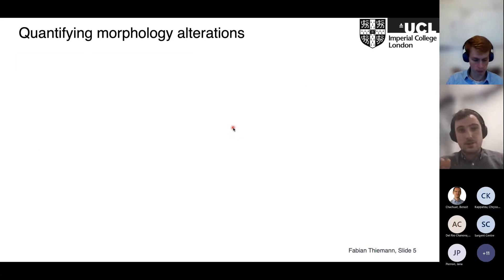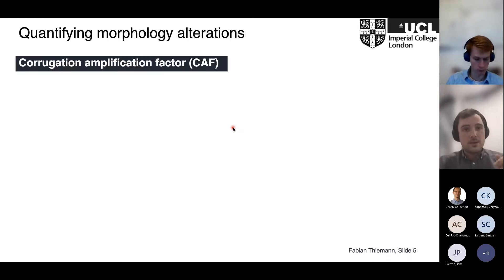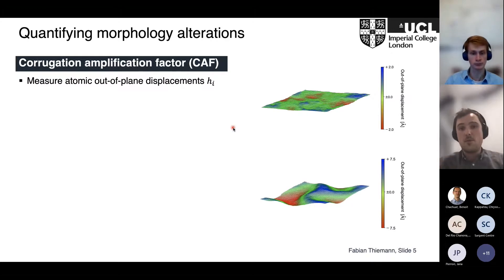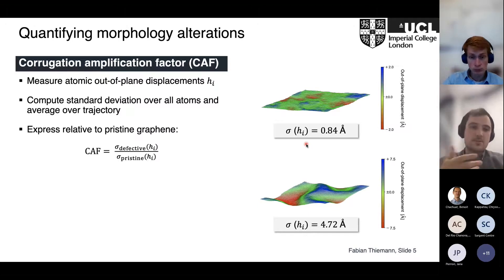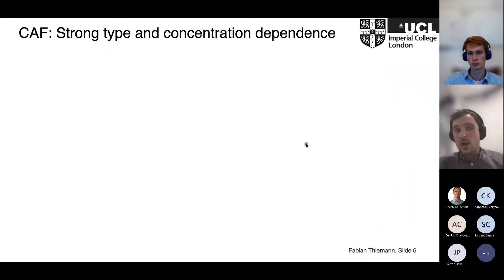Before I show you the first set of results, we need to talk about how we can quantify the morphology—how can we express this as one scalar value ideally? For this we introduce the Corrugation Amplification Factor, short CAF, where we measure the atomic out-of-plane displacements of our graphene sheet. These are snapshots where the atoms are colored according to their height or out-of-plane displacement. We compute a standard deviation over all atoms and average that, which gives us a good idea of the corrugation. Because we're interested in relative values, we express everything relative to the pristine case. We can compute a CAF for each system, each defect concentration, and each type.